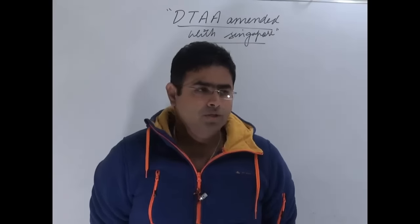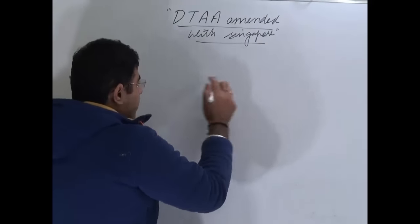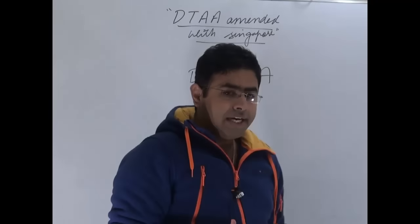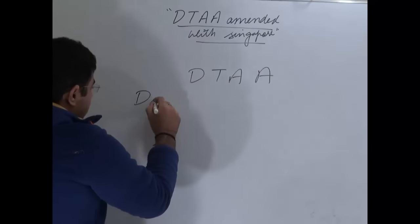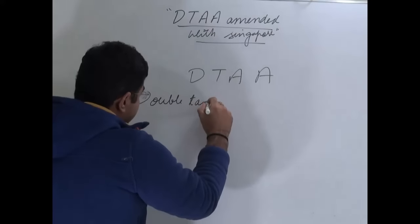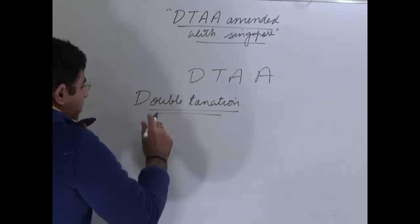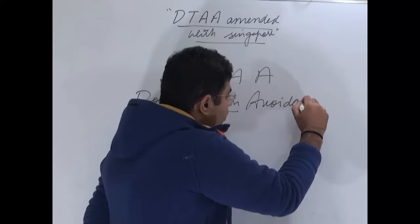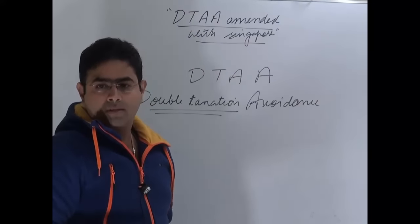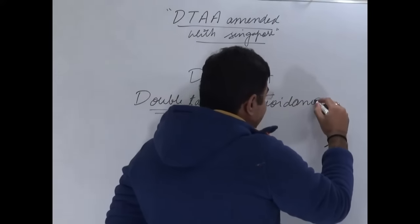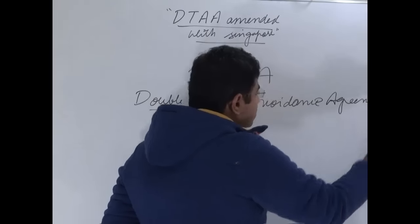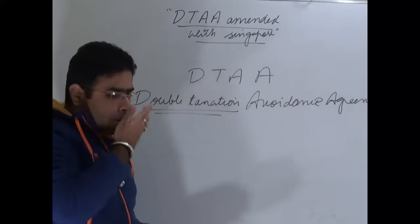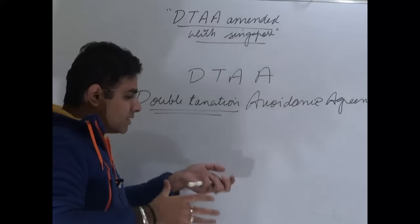This is about double taxation avoidance agreement. First we need to understand what is this double taxation avoidance agreement and why such agreements came into being. Double taxation means something in which double taxes were imposed. Double taxation avoidance means we need to avoid taxing something two times. This is a kind of agreement.